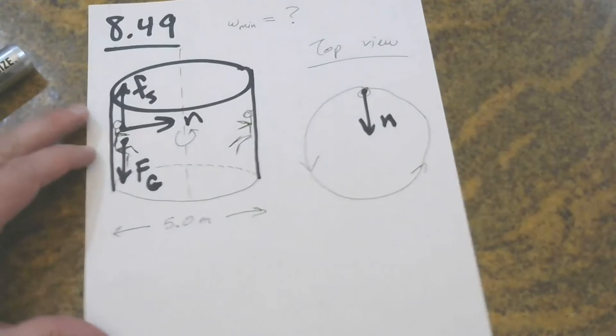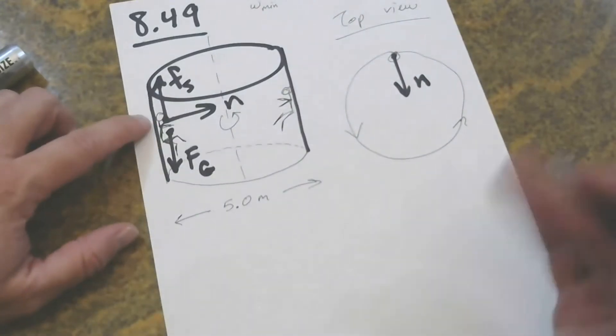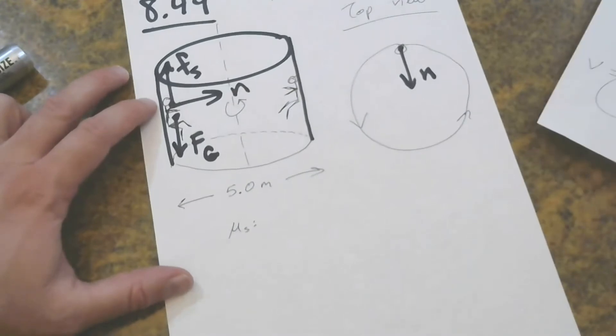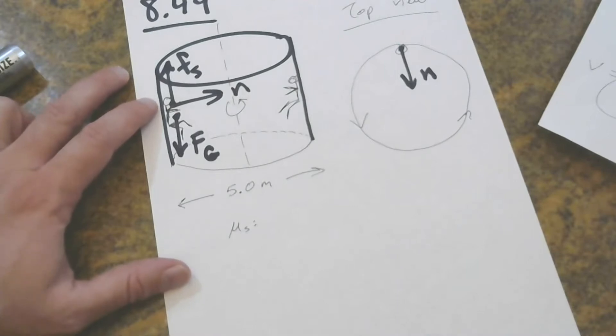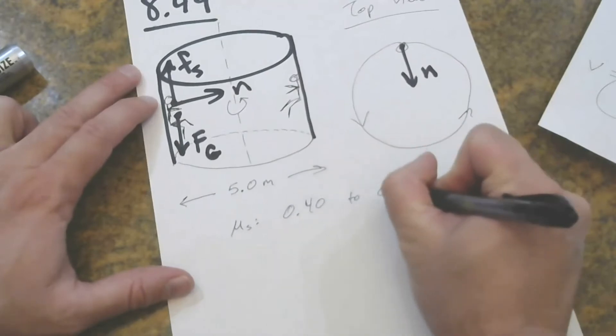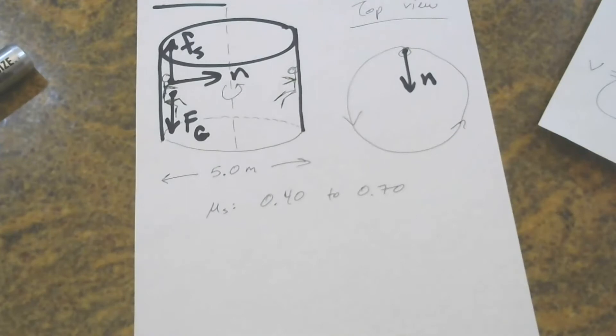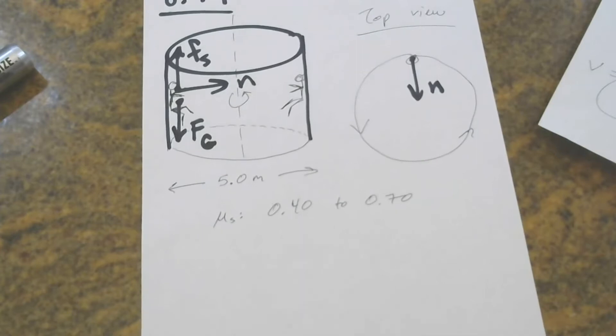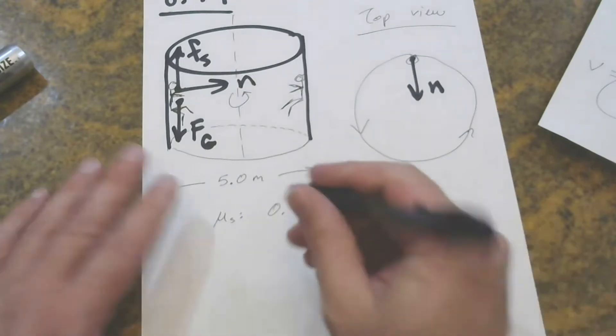We are told that the coefficient of friction between clothing and the wall. And you saw that the wall was upholstered. So we're given in the problem a range of typical values for coefficient of static friction between the cloth of clothing or the fabric of clothing. And they actually give steel. So I guess in this problem, we're imagining a ride that does not have upholstered walls. 0.40 to 0.70. So what are we supposed to do with that? A range of coefficients? Well, we're supposed to allow for the lowest possible coefficient.